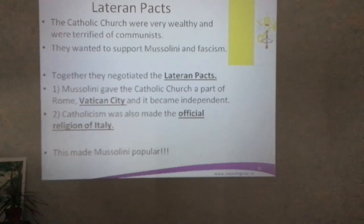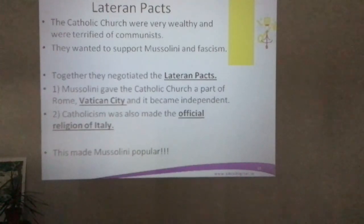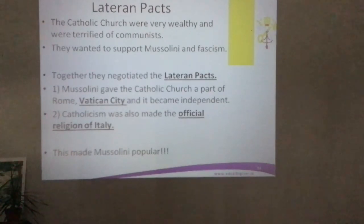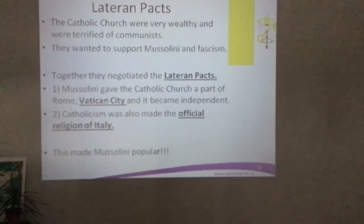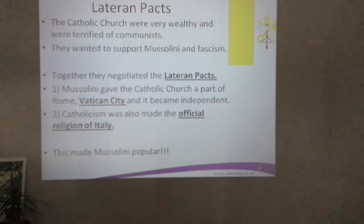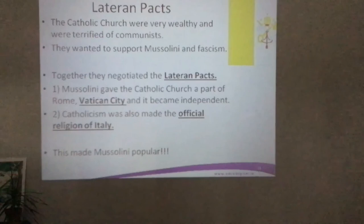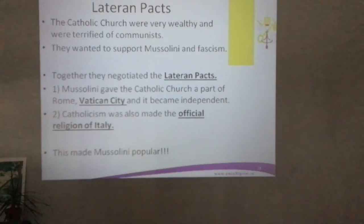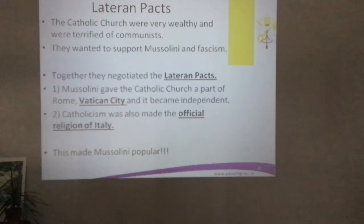The Lateran Pacts had two key elements: first, Mussolini gave the Catholic Church a part of Rome — today known as Vatican City — as an independent state, which it still is today. The Church loved this. In exchange, the Church supported Mussolini; priests gave speeches in favour of him, which was hugely significant because enormous numbers of people attended Mass every Sunday. Second, Catholicism was made the official religion of Italy, which made Mussolini more popular among religious Italians.